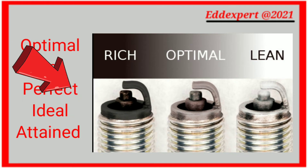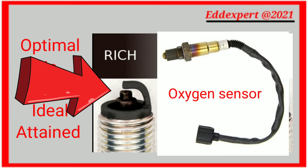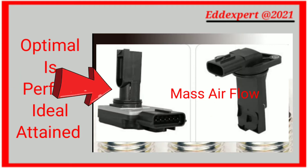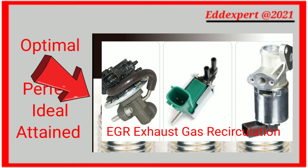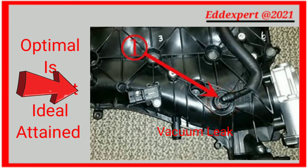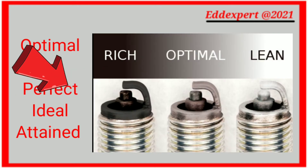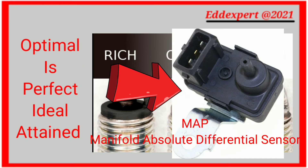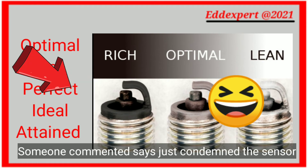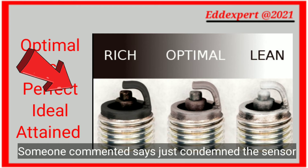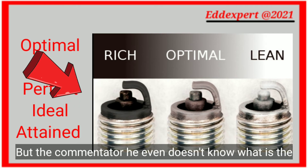Rich mixture occurs if there is a defective oxygen sensor, fuel regulator, mass air flow, EGR — there are so many things that can cause a rich mixture problem, including injectors. The last one is the manifold absolute pressure sensor. I was shrugging my shoulder when someone commented on my Facebook account to condemn the MAP sensor, when he doesn't even know what the MAP sensor is used for.